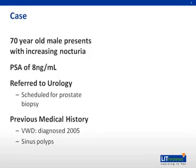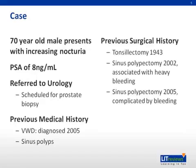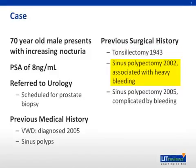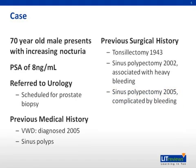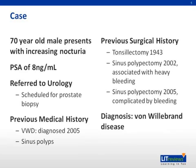Also of note, the patient has had recurrent sinus polyps. His previous surgical history includes a tonsillectomy in 1943, a sinus polypectomy associated with heavy bleeding in 2002 — no workup was pursued at that time. A repeat sinus polypectomy in 2005 was complicated again by bleeding, and the workup of this bleeding led to the diagnosis of von Willebrand's disease.